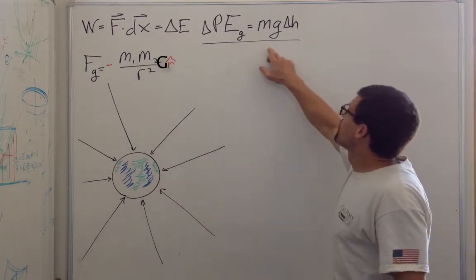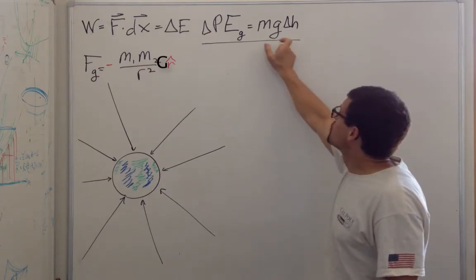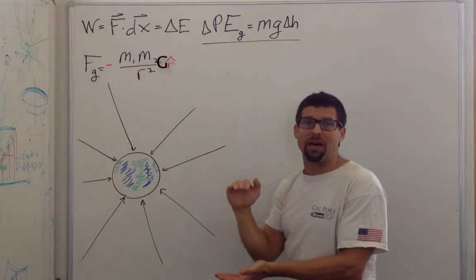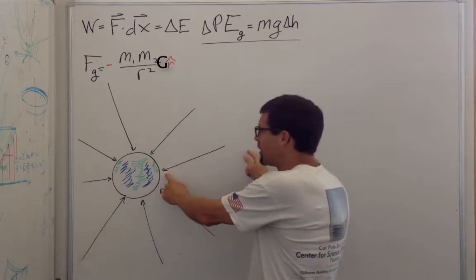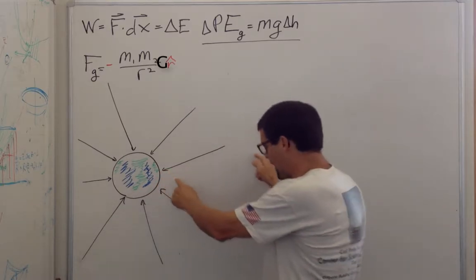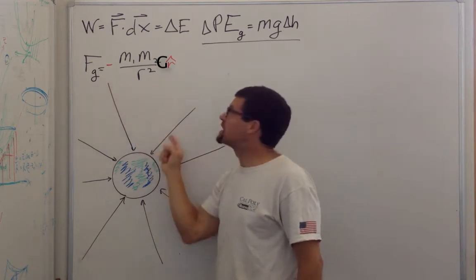We know that gravitational potential energy is equal to mgh, but this presumes you have a constant force of gravity. How do you calculate the change in potential energy when you move far away from a planet, and the force of gravity changes as a function of your distance?